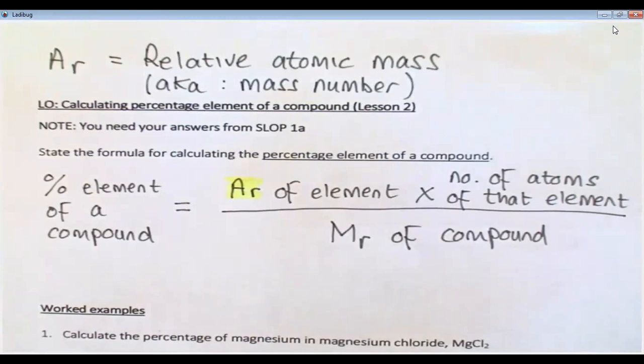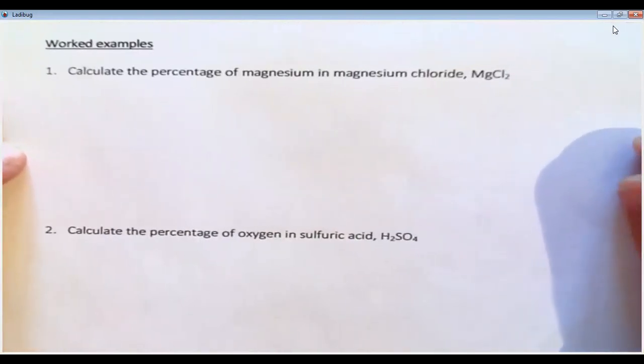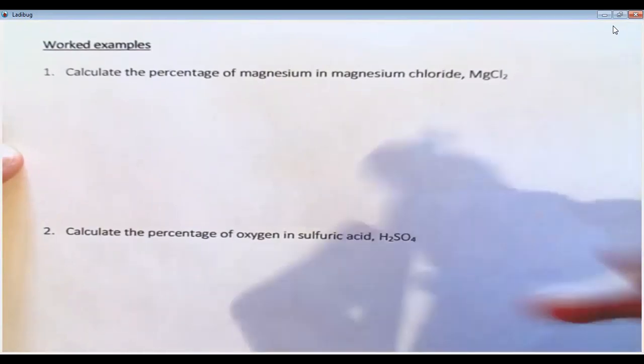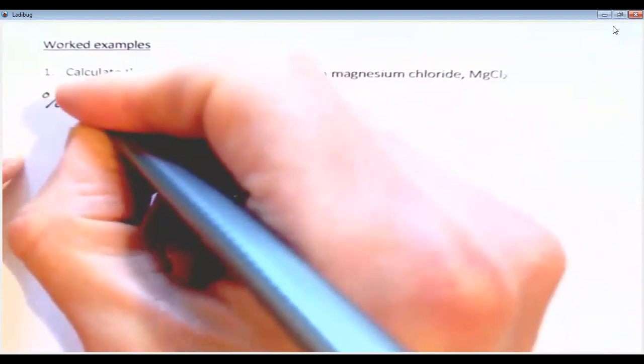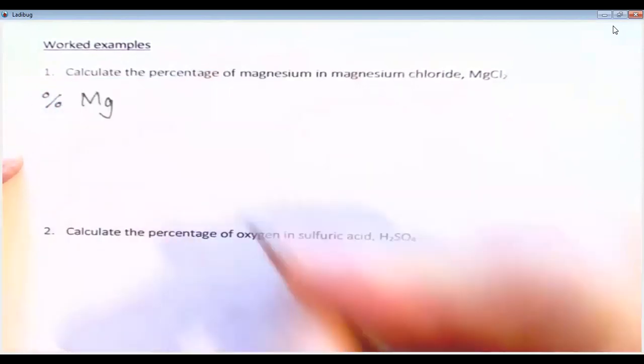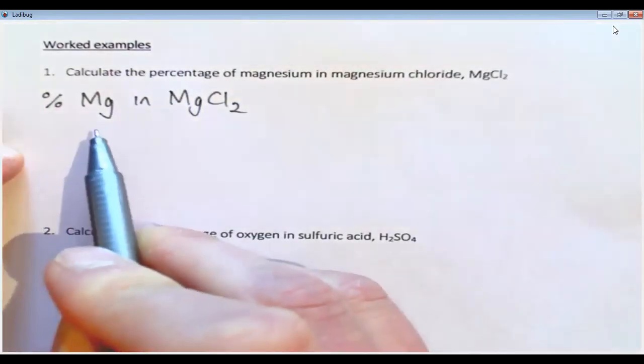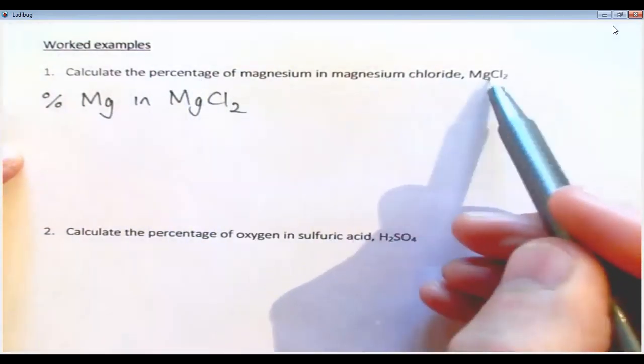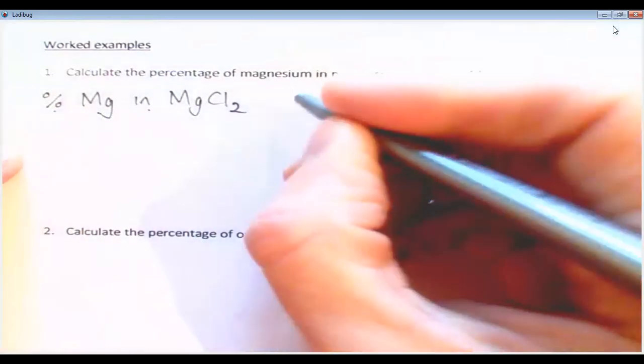So the worked examples—two examples underneath. I'll read and reproduce this. Calculate the percentage of magnesium in magnesium chloride, which is MgCl2. So I'm going to write %Mg in MgCl2. Really I've summarized the question. It says calculate the percentage of magnesium in magnesium chloride MgCl2, so I've just written %Mg in MgCl2. Now that equals